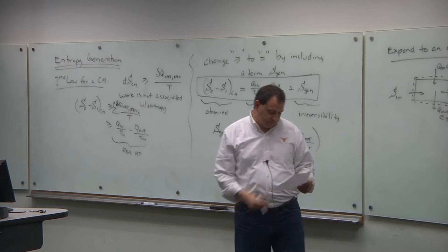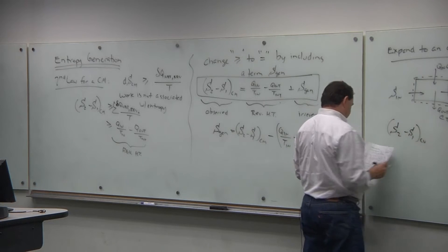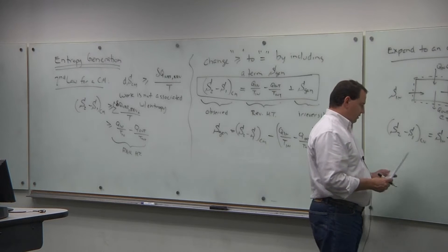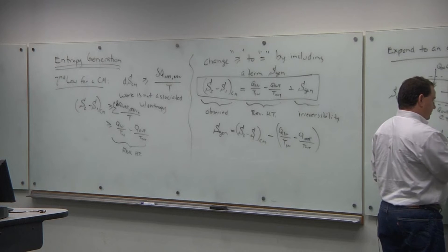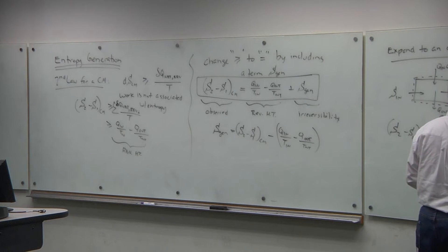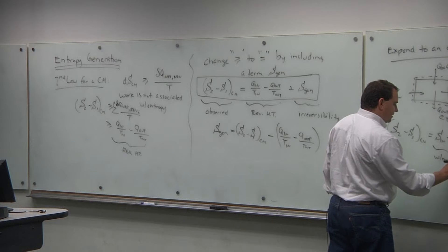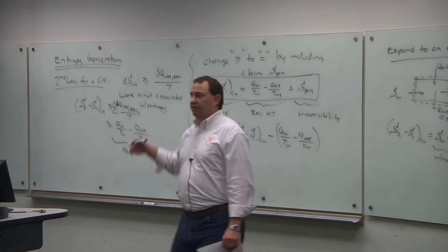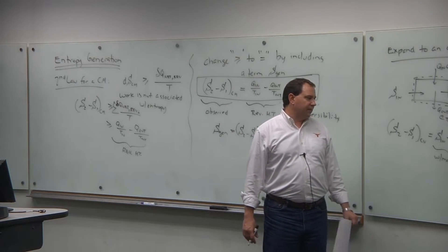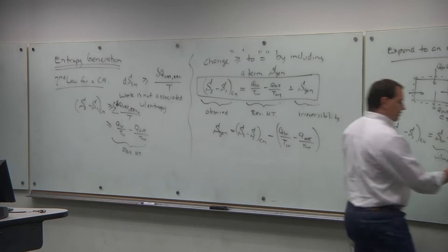The entropy in the system might change. For the control volume — the open system — S2 minus S1 equals the entropy change due to mass flow, plus the sum of Q_in over T_in minus the sum of Q_out over T_out, plus the entropy that's generated. The S_in and S_out are associated with mass flow. Just like mass carries enthalpy, mass can carry entropy in or out.